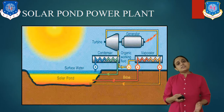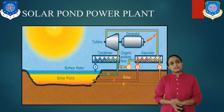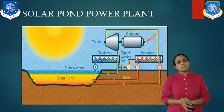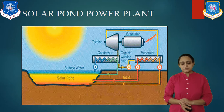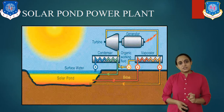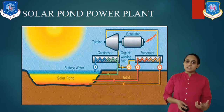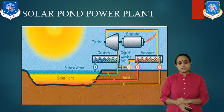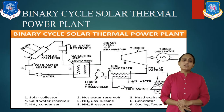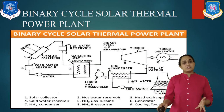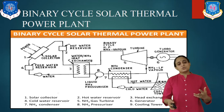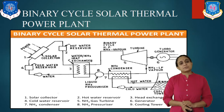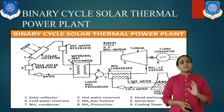Now let us cover the topic named binary solar cycle and thermal power plant. Before covering this, you have to see the solar power plant cycle in our diagram. As you see, there is a generator and a turbine; if the water gets heated we can generate electricity. If we study the binary cycle solar thermal plant, it has basically two cycles: water cycle and gas cycle.